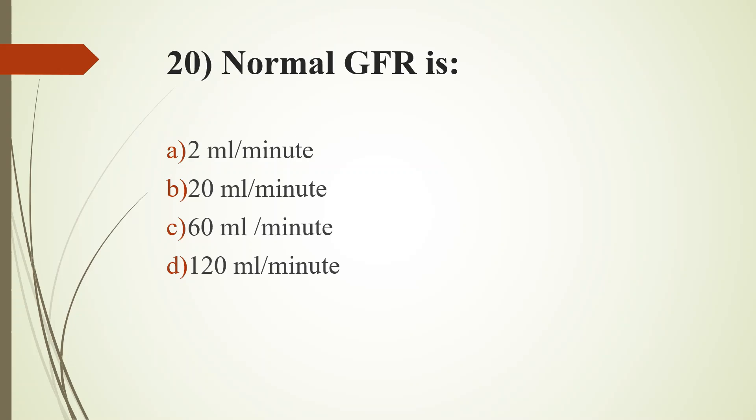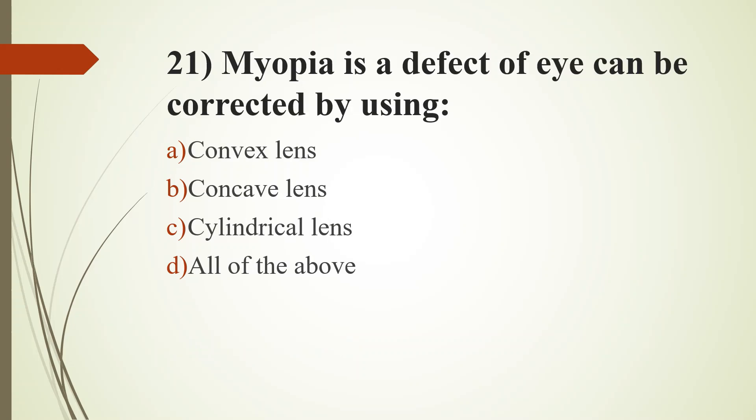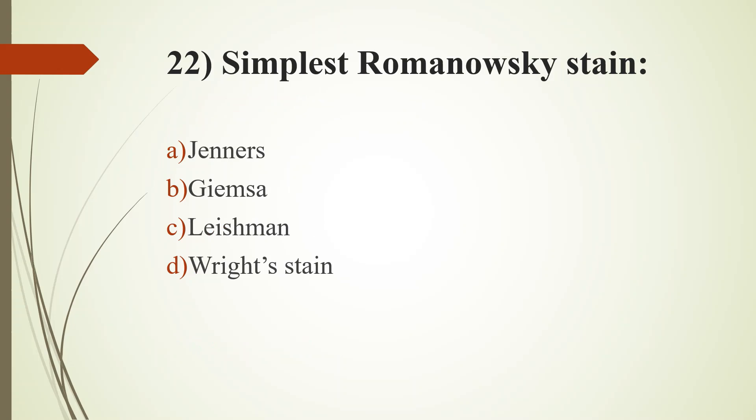20th question. Normal GFR, that is glomerular filtration rate: option A, 2 ml per minute; option B, 20 ml per minute; option C, 60 ml per minute; option D, 120 ml per minute. Answer is option D, 120 ml per minute. 21st question. Myopia is a defect of eye. Can be corrected by using: option A, convex lens; option B, concave lens; option C, cylindrical lens; option D, all of the above. Answer is option B, concave lens. 22nd question. Simplest Romanowski stain: option A, Giemsa stain; option B, Giemsa stain; option C, Leishman stain; option D, Wright stain. Answer is option A, Giemsa stain.